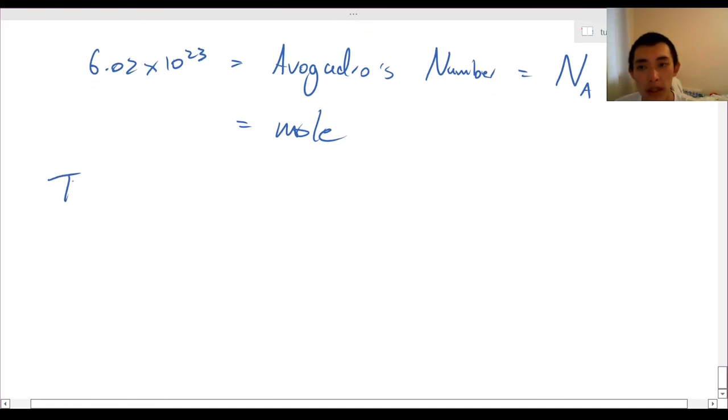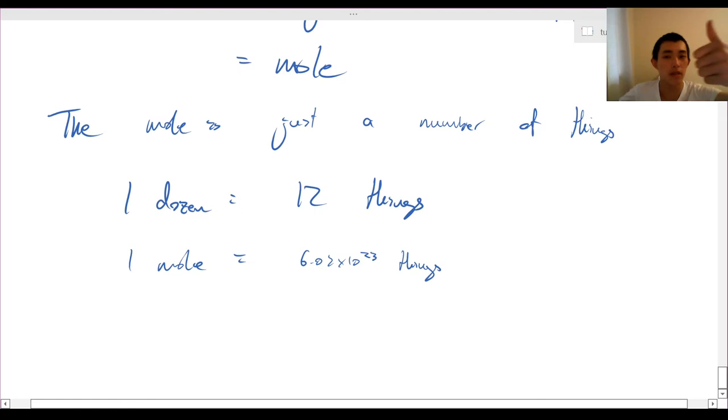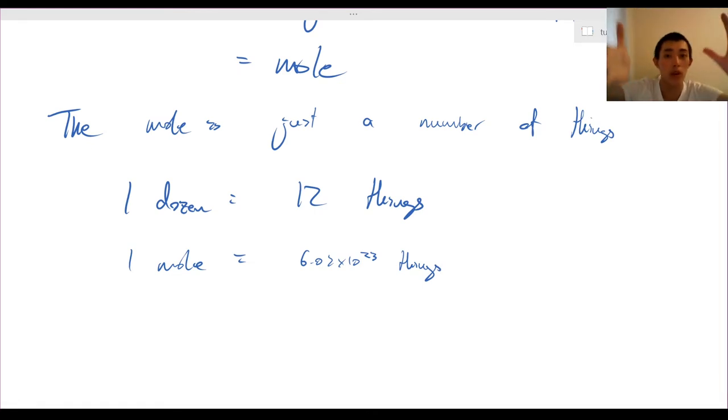But what I really want you to get is that the mole is just a number of things. It's just a number of things. It doesn't actually have to be related to chemistry. So for example, one dozen is equal to 12 things. And one mole is simply equal to 6.02 times 10 to the power of 23 things. Pretty neat, huh? So you know, you could have a mole of spiders, a mole of doughnuts. A mole of doughnuts, by the way, would take up the entire world, actually. You could have a mole of eggs. You could even have a mole of dollars. You'd be very rich. You'd be about like a trillion times a trillion. But yeah, it's just a number of things.